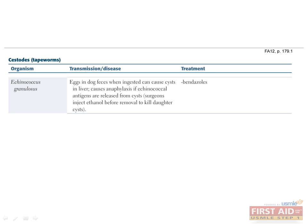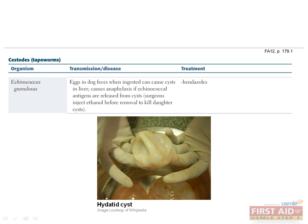Treat Diphyllobothrium latum with praziquantel. The last cestode is Echinococcus granulosus, contracted by ingestion of eggs from canine feces. Larvae hatch in the GI tract, penetrate the intestinal wall, and migrate to target tissues, especially the liver, where they form hydatid cysts. These liver cysts can present with right upper quadrant pain and hepatomegaly. Diagnosis is made by seeing the cyst on x-ray or CT. Surgeons must be extremely careful when removing these cysts, as rupturing them can release echinococcal antigens causing severe anaphylaxis. Surgeons inject ethanol into the cyst before disturbing it to kill the daughter cysts. Treat with albendazole.